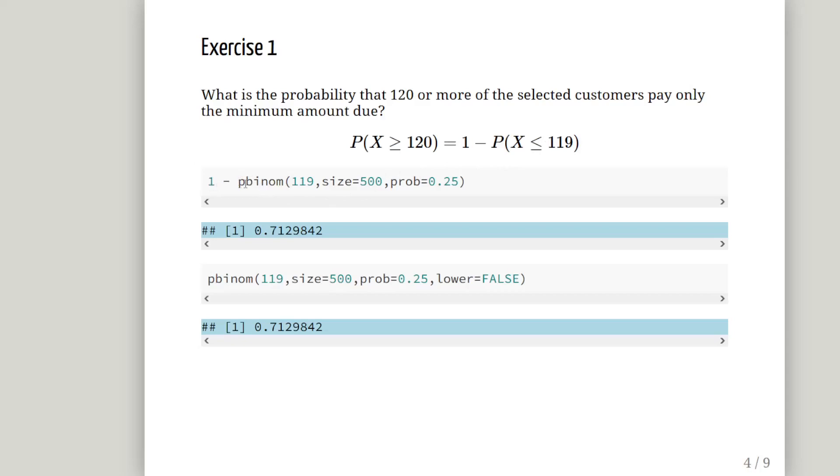Now the command here is as follows: 1 minus p for cumulative probability, the cumulative distribution function, binom for the binomial distribution. The value we're interested in is 119. The syntax for dealing with the binomial distribution in R is size that corresponds to n, and prob that corresponds to p equals 0.25. It's just to differentiate one probability distribution from the other so that they have their own very distinct syntax. So remember that: size equals and prob equals. Don't type in n equals and p equals and wonder why you're stuck.